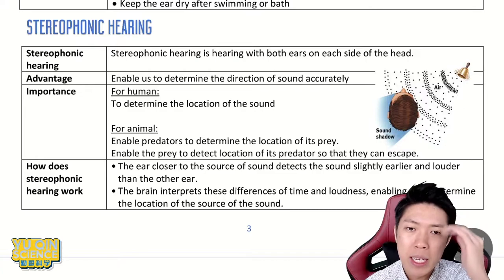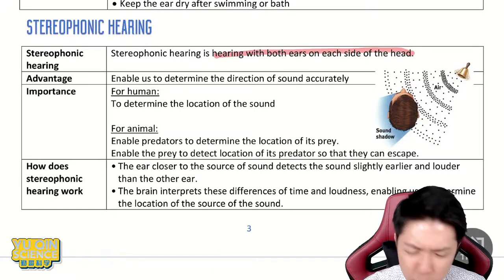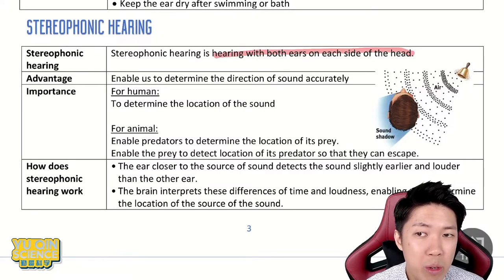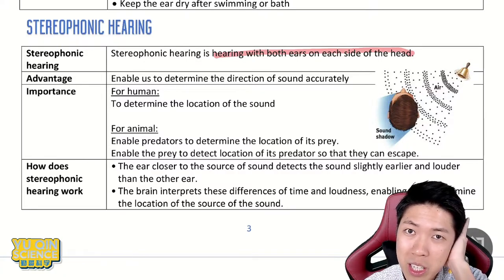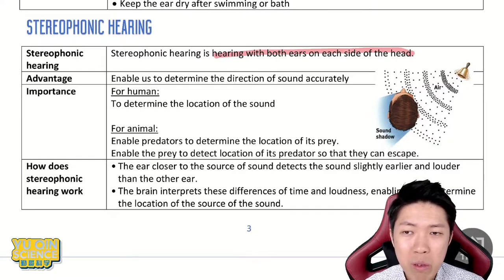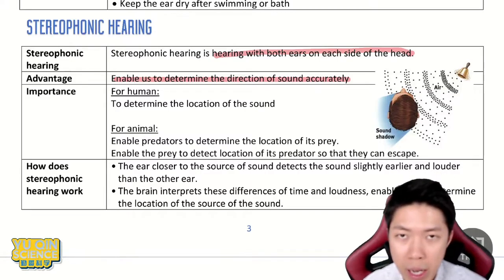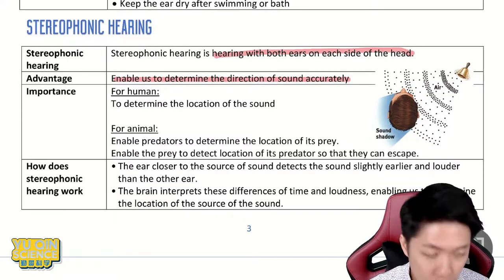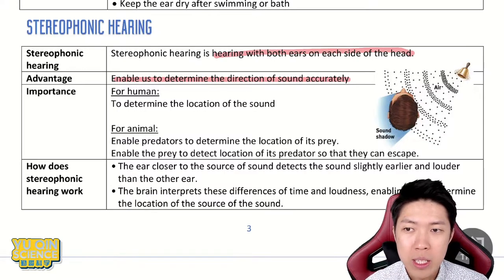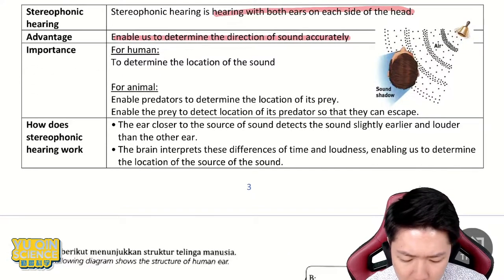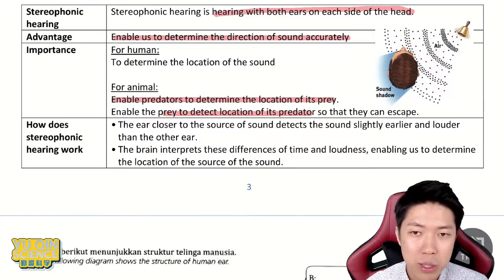Stereophonic hearing — the word 'stereo' means two, like mono speakers and stereo speakers. Stereo means two. Hearing with both ears. You might think, of course we hear with both ears, but have you tried hearing with just one? Try and close one side — your world will change. Hearing with two ears enables you to determine the direction of sound. For example, your mom calls you from behind — you know exactly which direction to turn. For animals, it enables predators to determine the location of prey, and prey to detect the location of predators so they can escape.